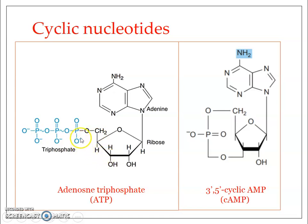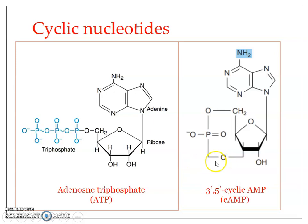The OH on the phosphate and the OH on the 3' carbon combine, releasing H₂O in a condensation reaction, forming an ester bond. Since both ester bonds are with the same phosphate, this creates the cyclic structure. Because the cyclization is between the 5' carbon and the 3' carbon of the ribose, it is referred to as 3',5'-cyclic AMP, or 3',5'-cyclic adenosine monophosphate.